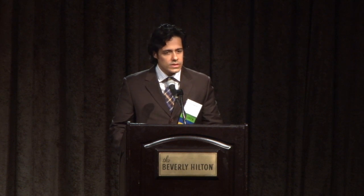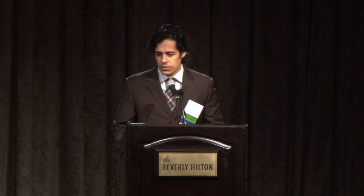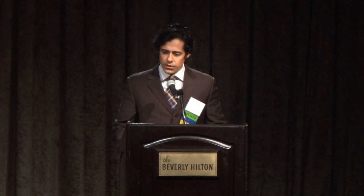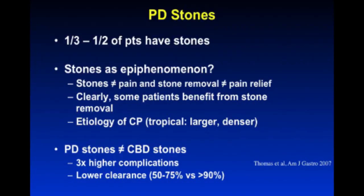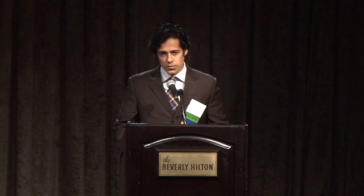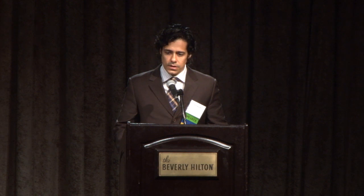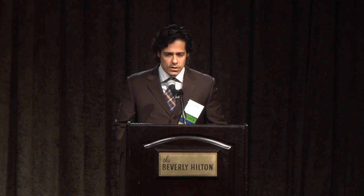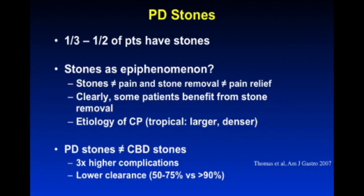Moving on to stones: roughly a third to one-half of patients have stones, but stones don't necessarily equal the cause of pain — they may be an epiphenomenon depending on etiology. Patients with tropical fibrocalculous disease tend to have larger, denser stones and are younger. PD stones are not the same as CBD stones — they're more difficult to remove, less successful to clear, and associated with higher complications. Something in the head is more amenable to removal than in the tail; extensive stone burden, adherent or impacted stones, stones behind strictures or inside branches are more difficult.